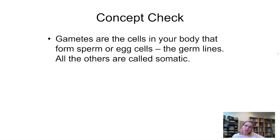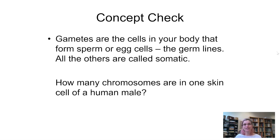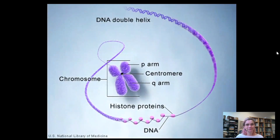Let's do a quick concept check. Gametes are the cells in your body that form sperm or egg cells — the germ lines — and all the others are called somatic cells. How many chromosomes are in one skin cell of a human male? Hopefully you got 46. Only the egg and sperm cells have 23 — that's the haploid condition. Everything else is diploid.